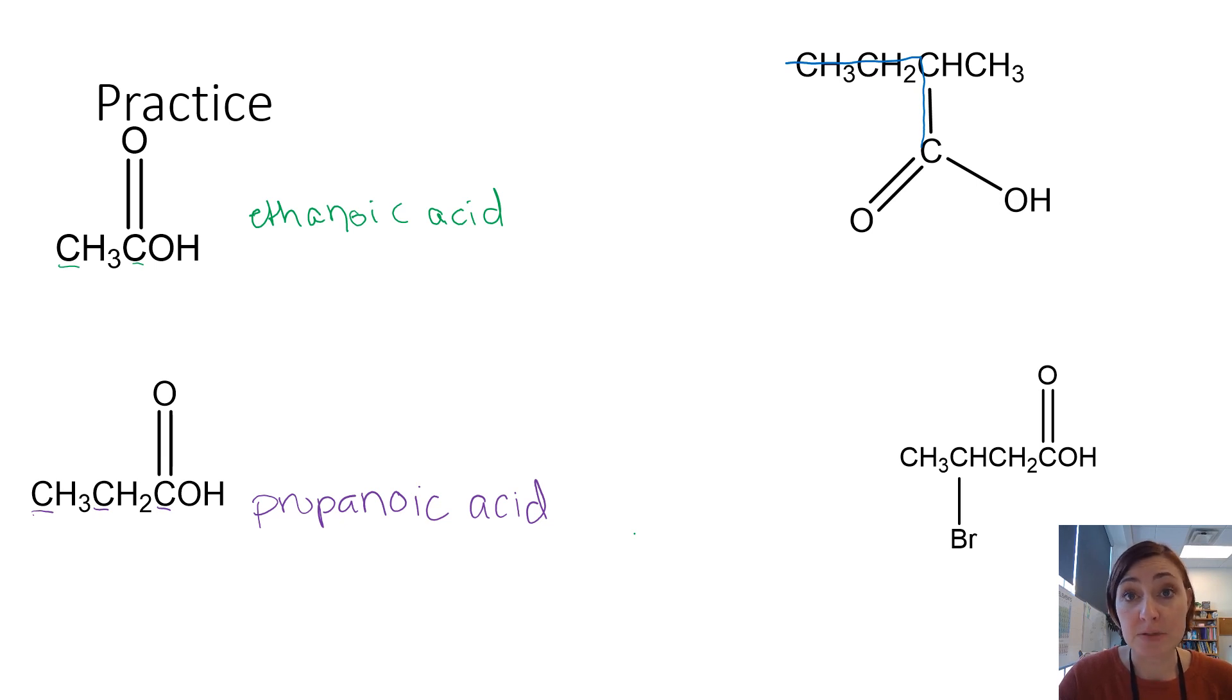So the parent name is going to be butane, but we are going to replace that E with oic acid, and then I drew a line through my longest chain, leaving a branch on carbon 2. So this would be 2-methyl butanoic acid, and that would be one word. It wouldn't be the space if I had planned just a hint better.